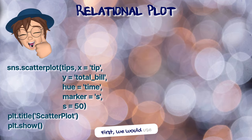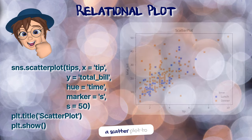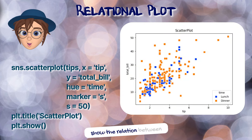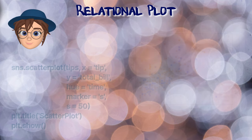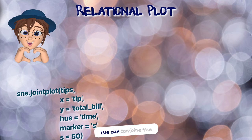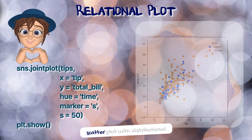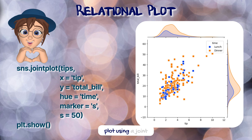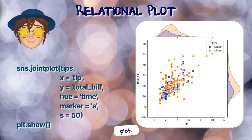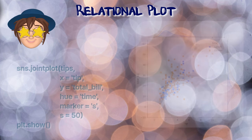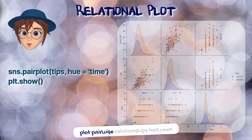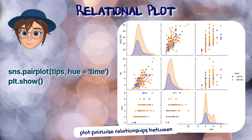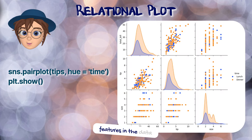First, we would use a scatter plot to show the relation between certain numerical features. We can combine the scatter plot with a distributional plot using a joint plot. Lastly, we can automatically plot pairwise relationships between features in the data frame using pair plot.